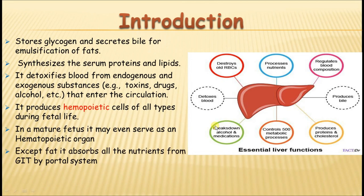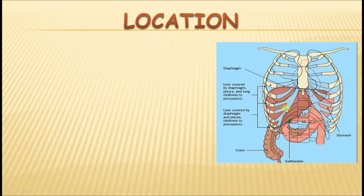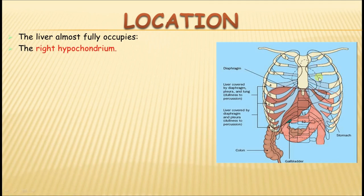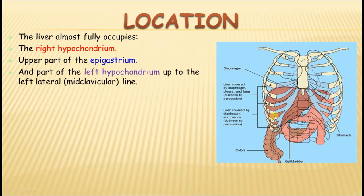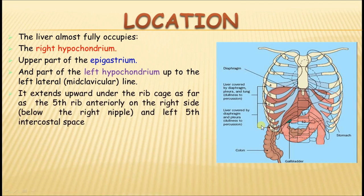Moving on to the anatomical features of the liver: it is situated mainly in the right hypochondrium. It extends into the epigastrium and also into the left hypochondrial region up to the mid-clavicular line. Sometimes the liver also extends into the right lumbar region.